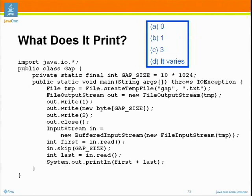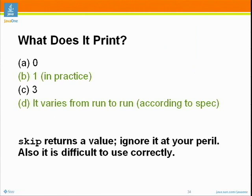How many people think the answer is A, 0? How many think B, 1? How many think C, 3? How many think D, it varies? I think it was a tie between B and D. Well, let's see what the program actually does. In practice, it will print 1. In theory, it will vary from run to run. The problem is that the skip method returns the number of bytes that it skipped — it may decide on a whim to not skip the full number of bytes you requested.